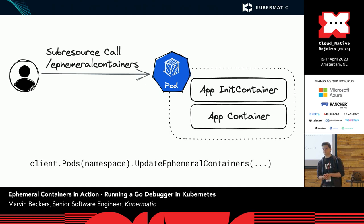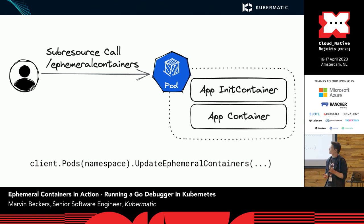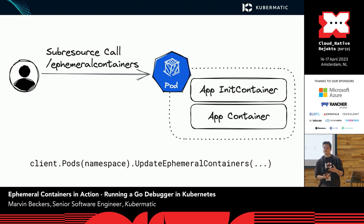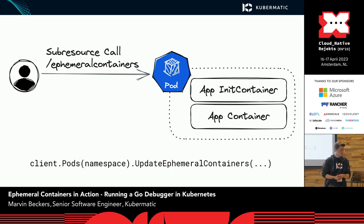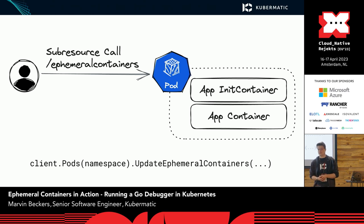Let's take a quick look at the implementation. Ephemeral containers are implemented as a spec field on your pod spec, however they are hidden behind a subresource. If you've ever written a Kubernetes controller, you may have dealt with updating a status subresource. There's a special API endpoint called ephemeral containers that you need to call. Using that, you can update and add ephemeral containers. There's a short code snippet from the client-go implementation — be aware you need to call that special endpoint.